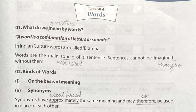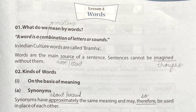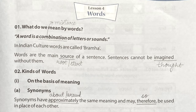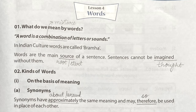In Indian culture, words are called Brahma. Words are the main source, the main root, or the start of a sentence. If we have to make a sentence — as we are watching here also — if we need to write a sentence, we should have the words, we should have a collection of words, so that we can make a sentence and communicate with each other.